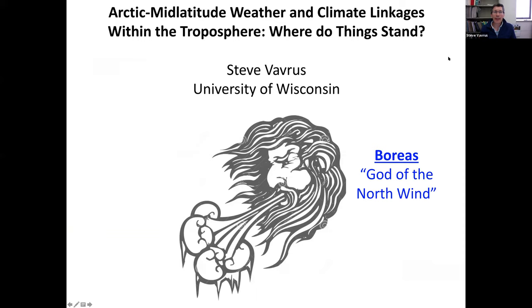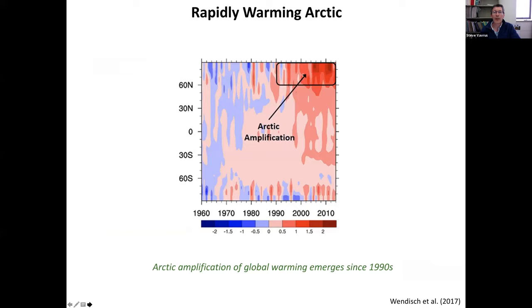I'll wrap things up by focusing downward, mostly on the troposphere, looking at these Arctic mid-latitude climate linkages. The big question is how far equatorward the Arctic's icy breath extends. As Judah talked about, Arctic amplification has become commonplace since the 1990s — it's been showing here in all seasons, a relatively recent phenomenon, but no doubt it is happening.